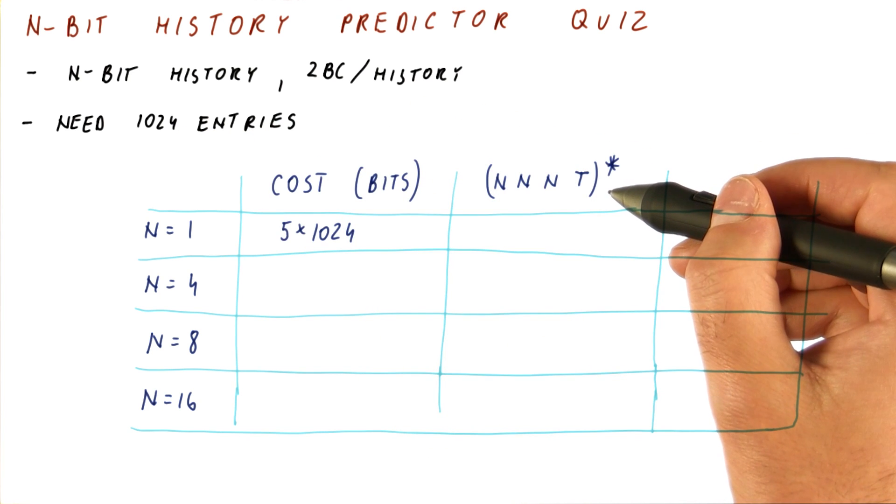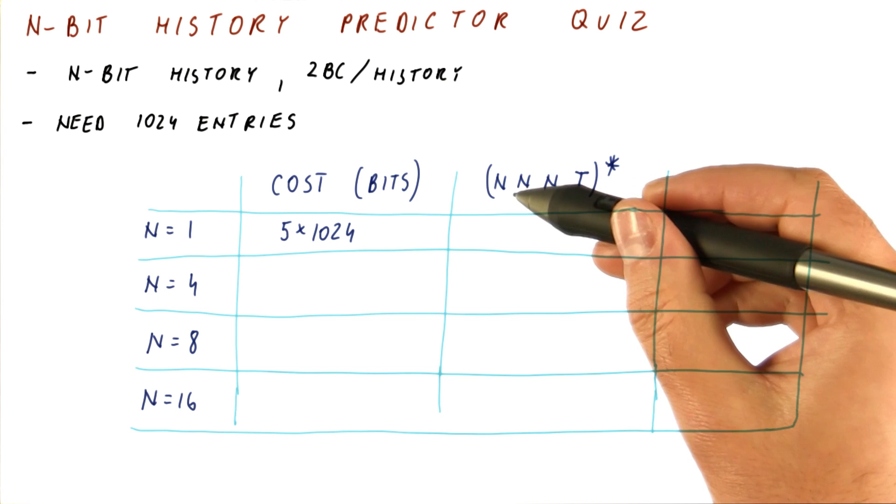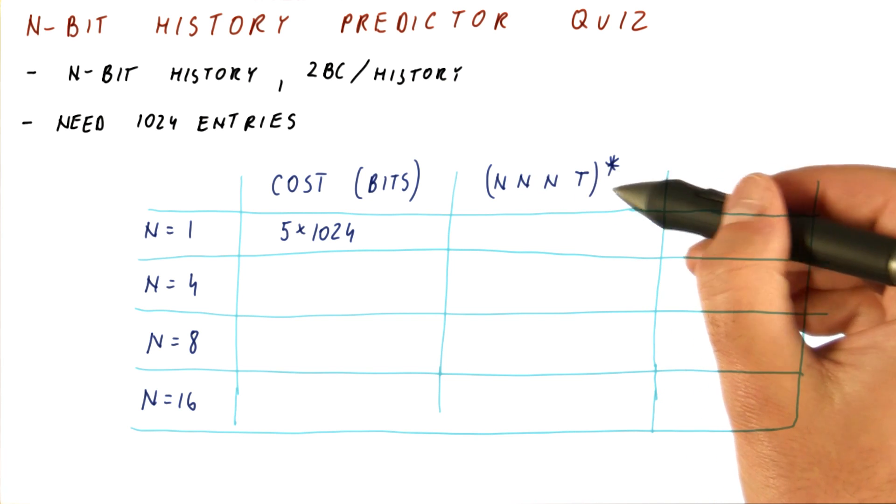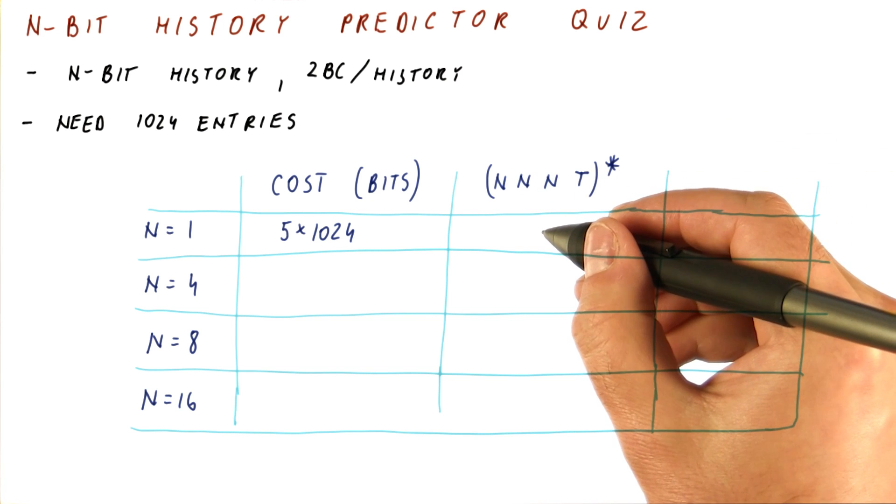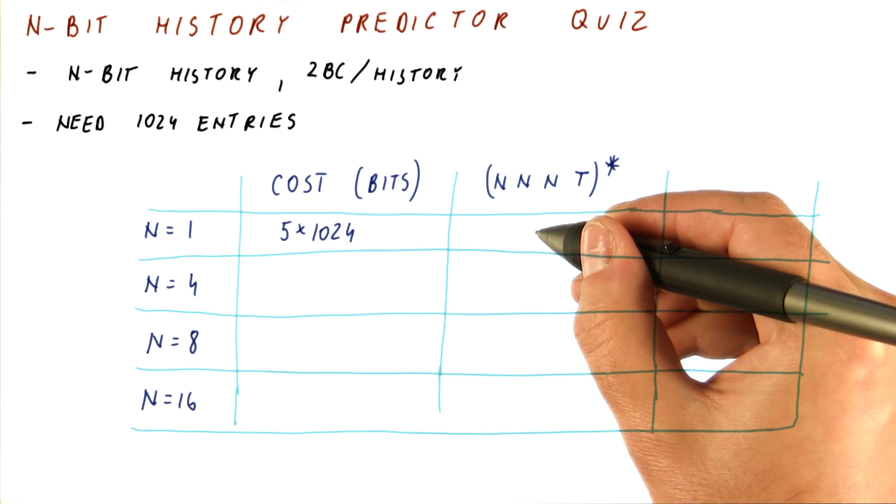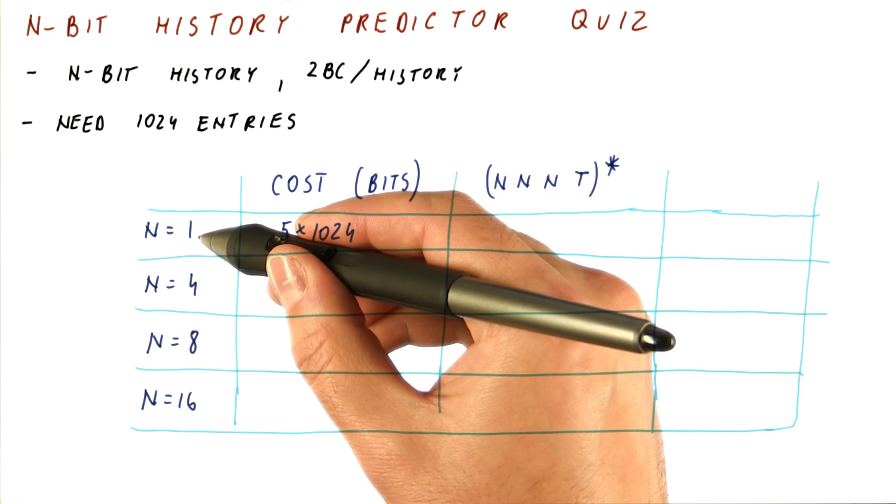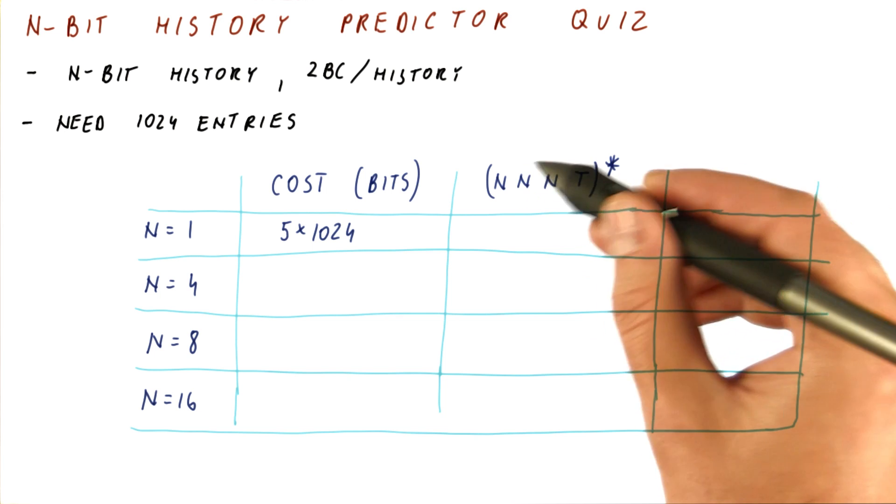Is this predictor good for a pattern of n, n, n, t that repeats? We know already that the one-bit history predictor is not good for this pattern because it's too long for it.